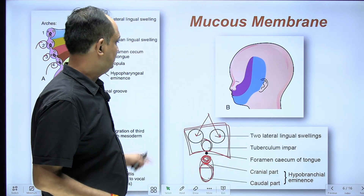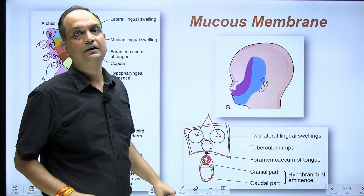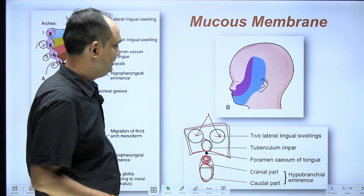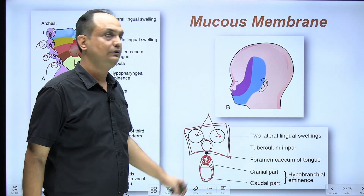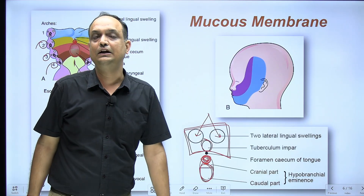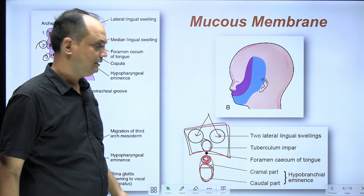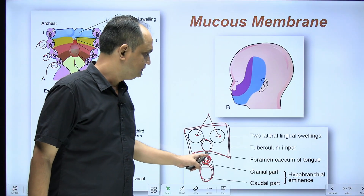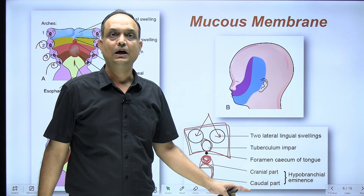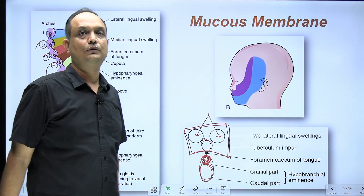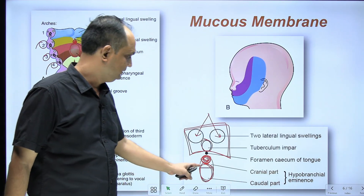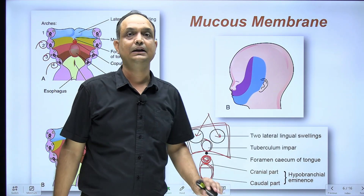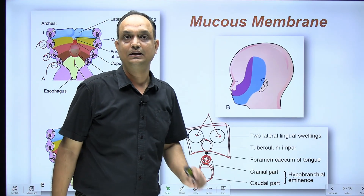To summarize the components: the first arch forms the two lateral swellings and the tuberculum impar; the second arch forms the copula (with no derivative in the tongue); and the third and fourth arches form the hypobranchial eminence.